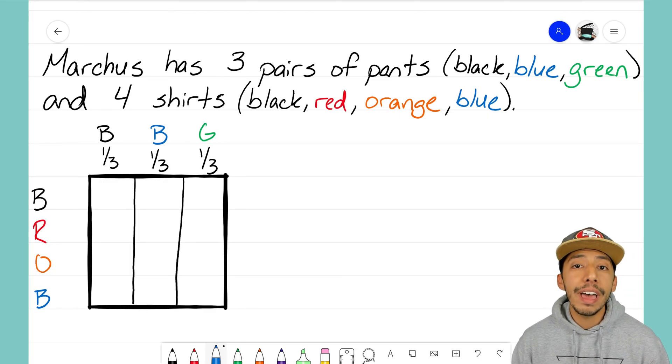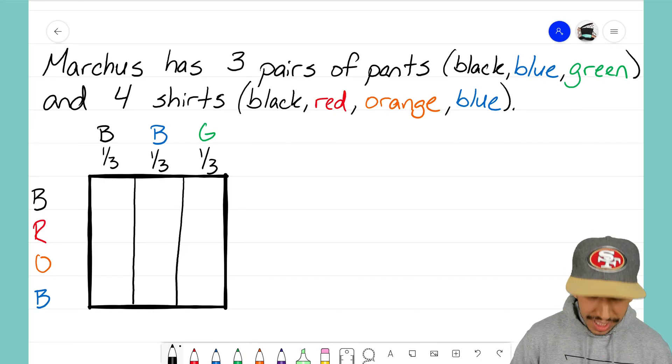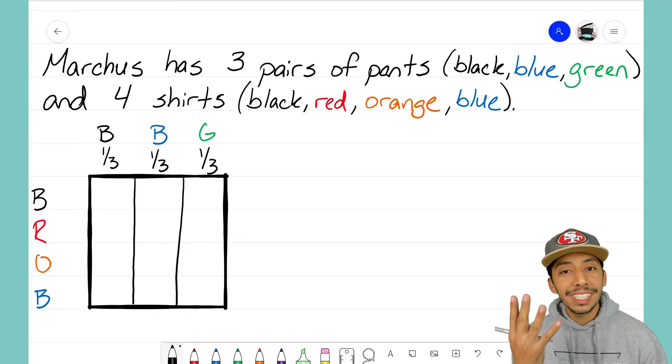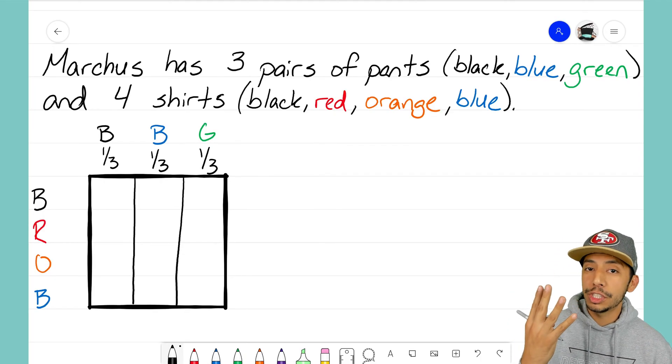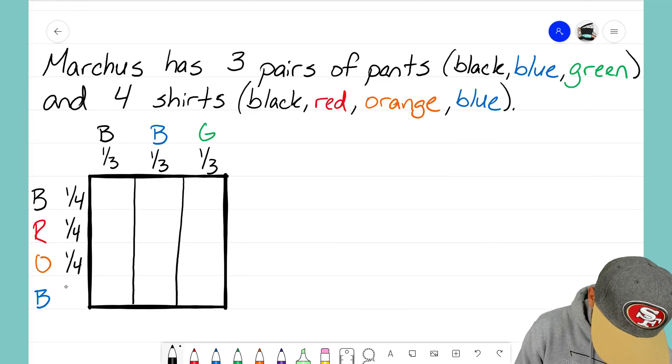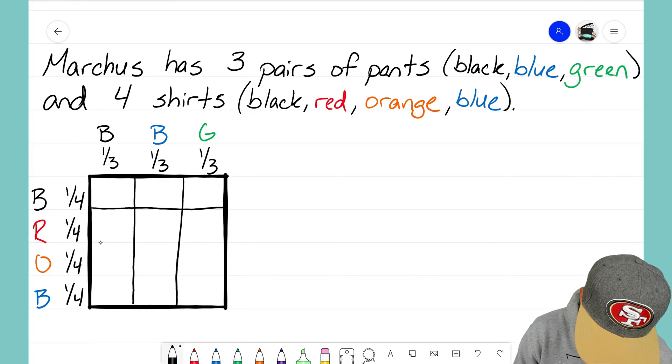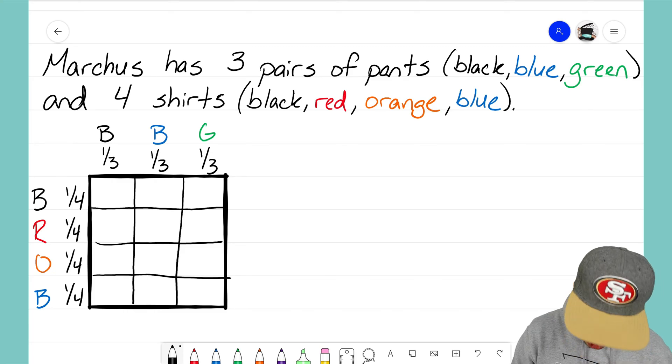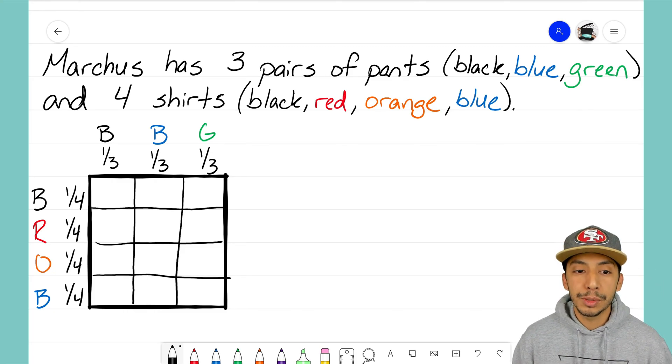Again, he is not more likely to pick one color over the other, which means they all have an equal chance of being picked. So since there's four different shirts, that means he has a one in four chance of picking that shirt. So every fraction for this is going to be one fourth going all the way down. And then I'm going to draw in the horizontal lines showcasing my sample space.